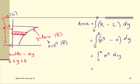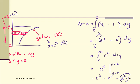The antiderivative of e^y is e^y. Evaluating from y=0 to y=2 gives e² minus e⁰. Since e⁰ equals 1, the exact value of the area is e² minus 1.